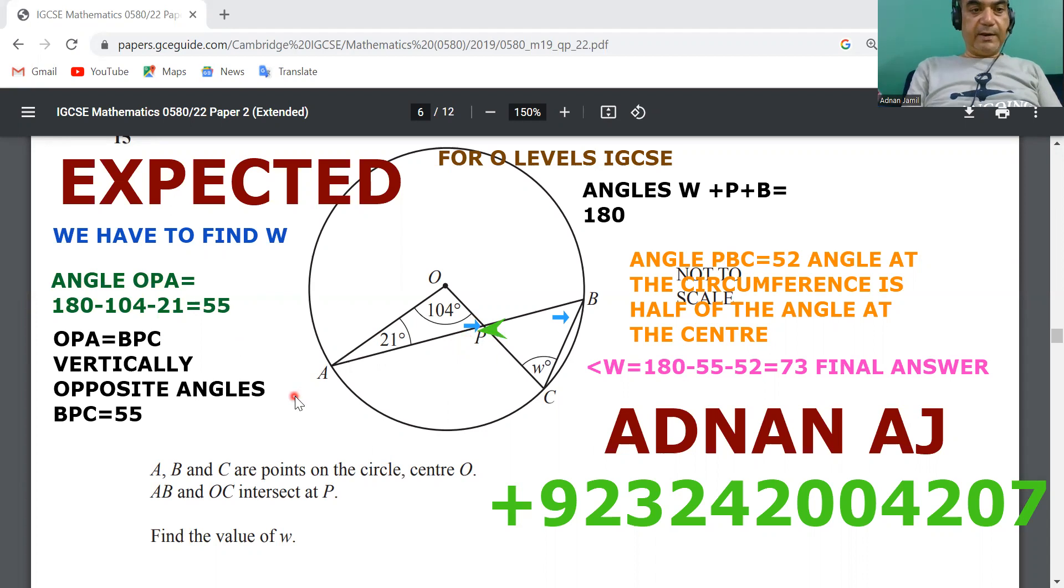So we can see that OPA and BPC, they are both equal because they are vertically opposite. Now, once we get this angle OPA which is 55 degrees, we come to the next triangle which is PBC.